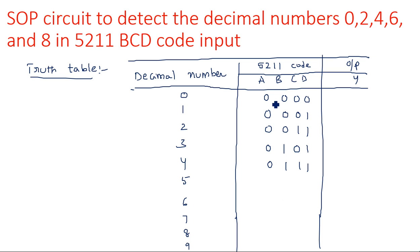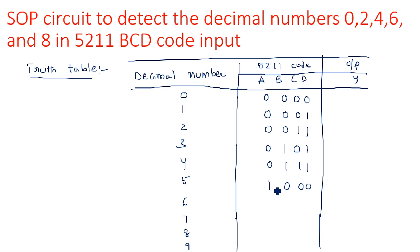Decimal 5 is represented as 1000 in 5-2-1-1 code. Note that 1000 in 8-4-2-1 would represent 8, but here in 5-2-1-1 the weight of the MSB is 5, so 1000 equals 5. So decimal 5 is coded as 1000.